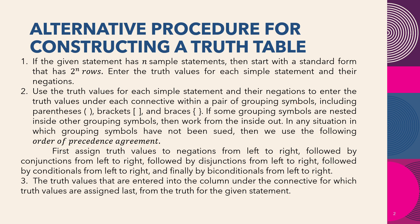Grouping symbols include parentheses, brackets, and braces. If some grouping symbols are nested inside other grouping symbols, then work from the inside out. If no grouping symbols have been used, then we use the following order of precedence: first, assign truth values to negation from left to right, followed by conjunction, then disjunction, and then conditional from left to right.